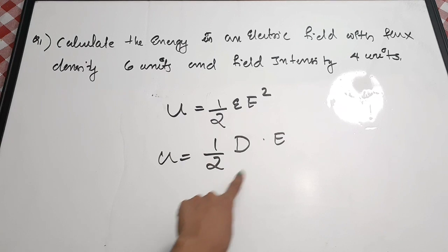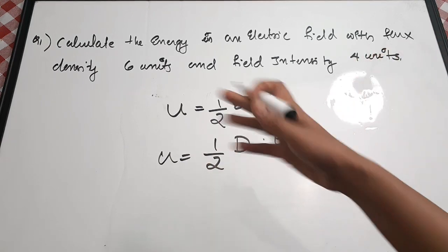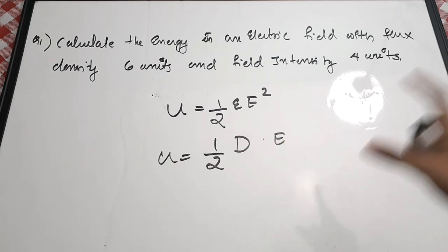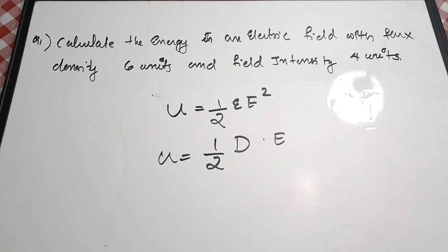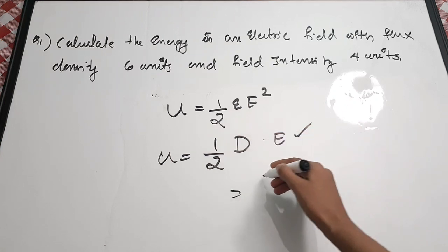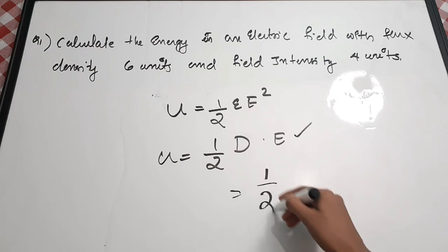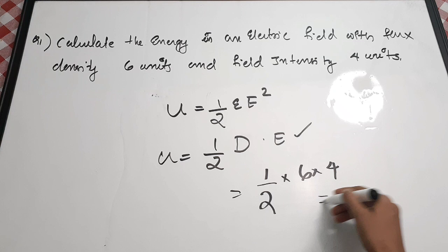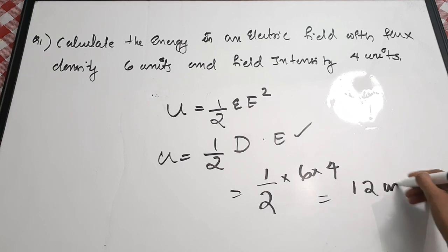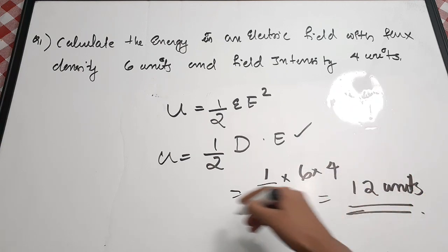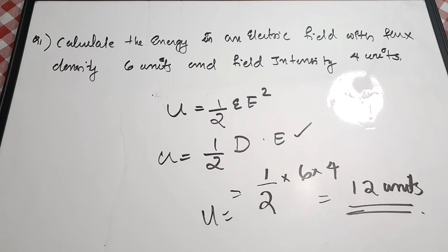If the flux density and electric field intensity are given directly, you use U = ½D·E. Here flux density is 6 and electric field intensity is 4, so: U = ½ × 6 × 4 = 12 units. Since it's given as units you can write U = 12 units, or 12 joules.